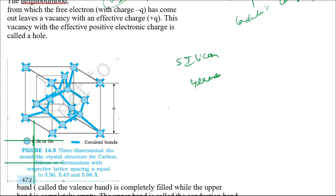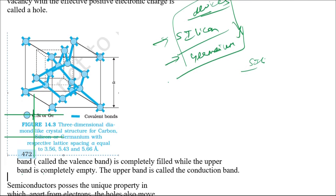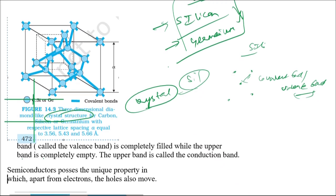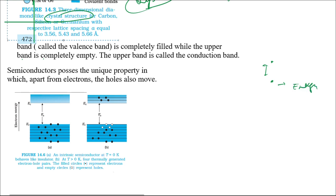Silicon has a crystalline structure. In its three-dimensional arrangement, each electron is shared by four other electrons — this sharing is nothing but a covalent bond. Because of this sharing of electrons and the resulting charges, two energy bands are formed in the atom.